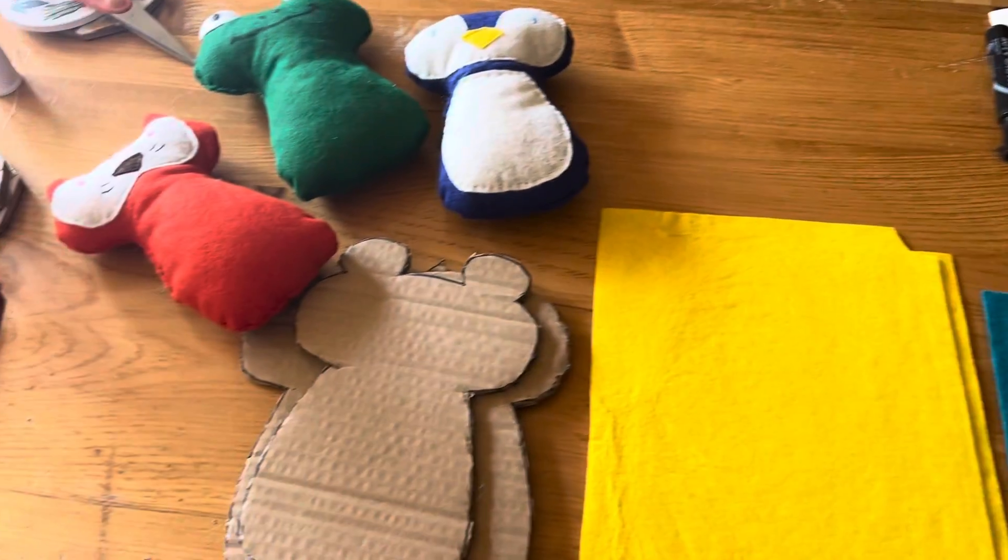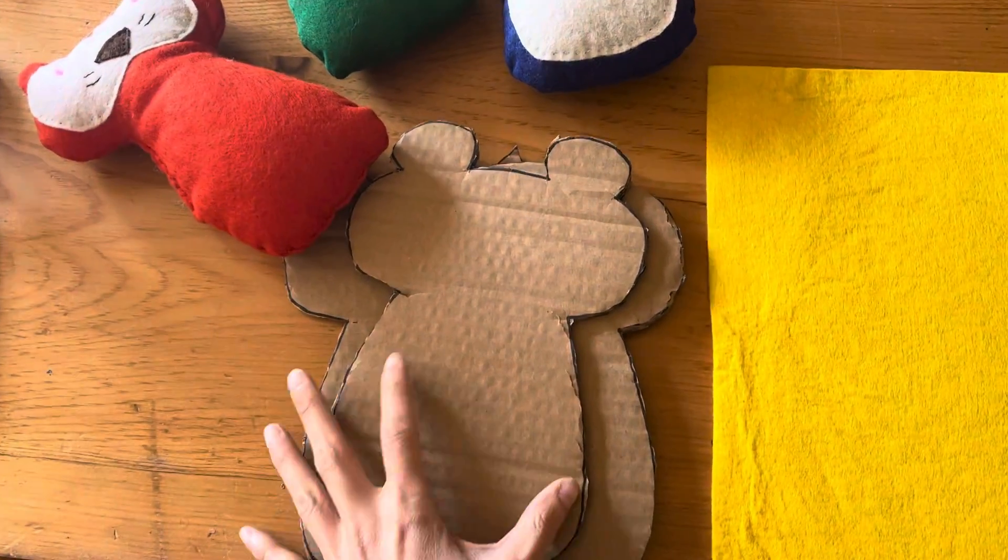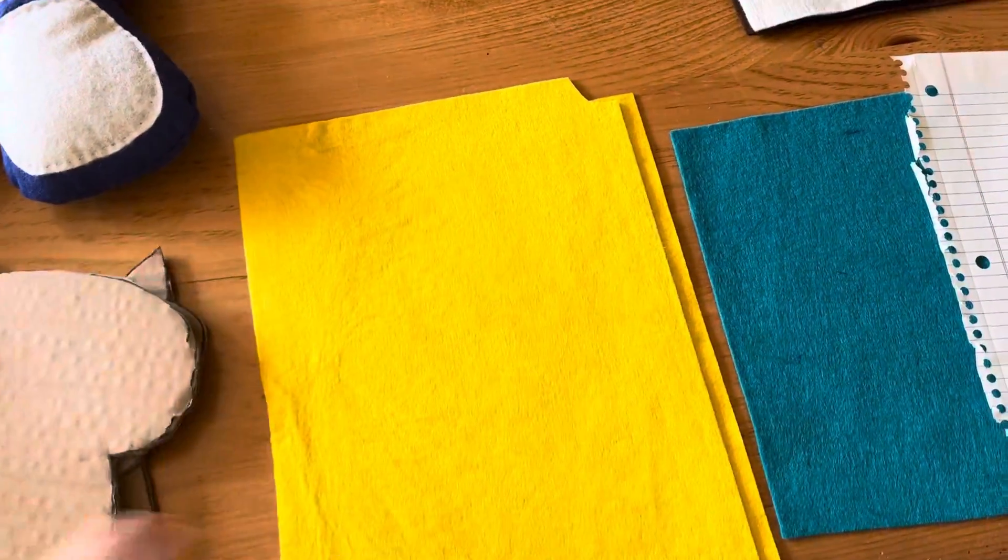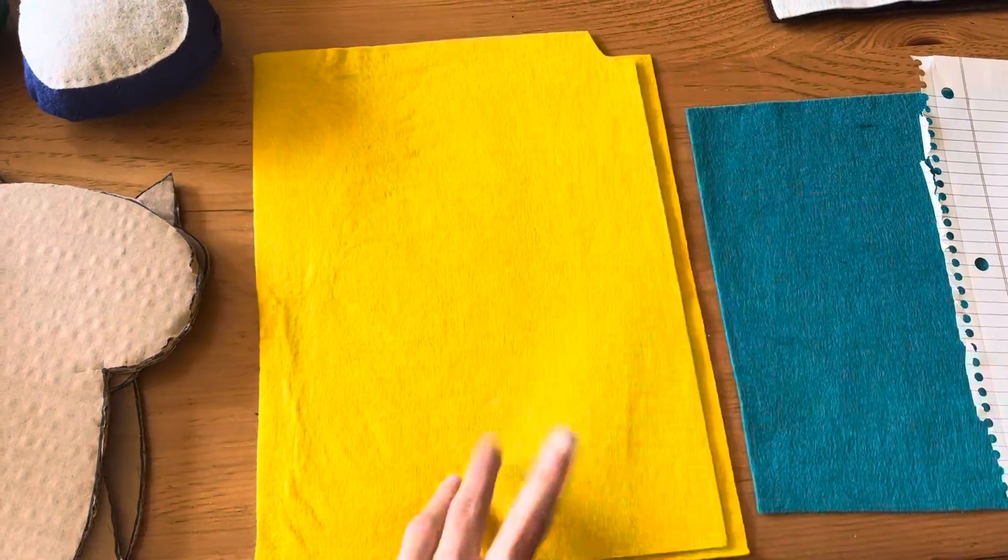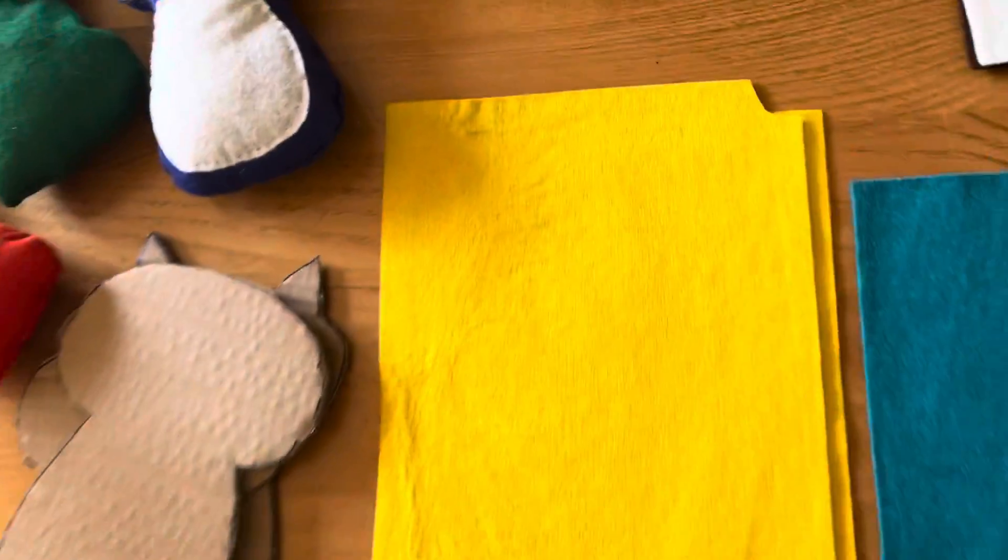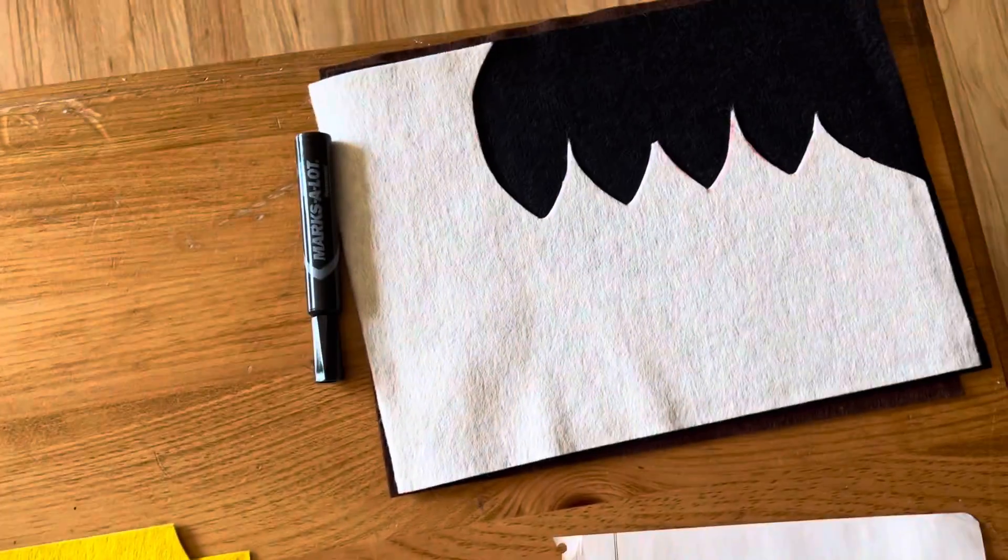When you're ready, the first thing that you're going to need is one of the cardboard tracers, two pieces of the same color felt, whatever you want your body to be, and then any other colors that you might want to add.